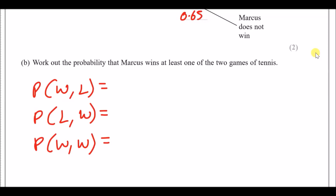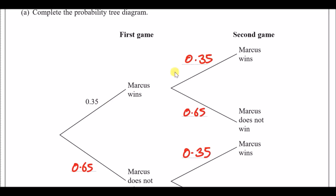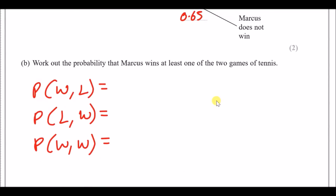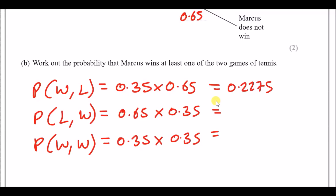Using the notation to keep track: winning then losing is 0.35 times 0.65; losing then winning is 0.65 times 0.35; and winning both times is 0.35 times 0.35. So 0.35 × 0.65 = 0.2275, and 0.35 × 0.35 = 0.1225.